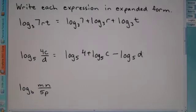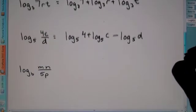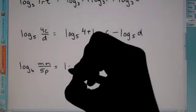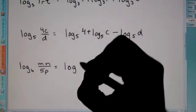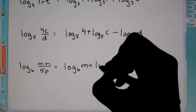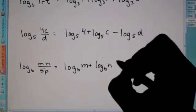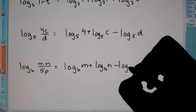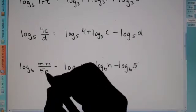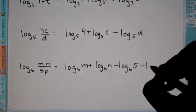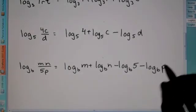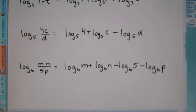Okay. So, these are pretty basic right now. One more. Again, anything in the numerator is a positive log. Anything in the denominator is a negative log. So, here we have log b m plus log b n minus log b 5. And since p is also in the denominator, it still is a minus log b p.